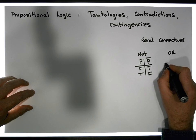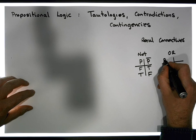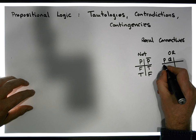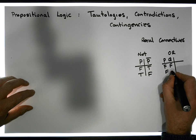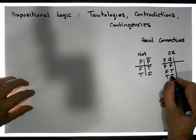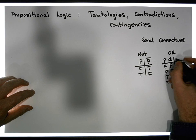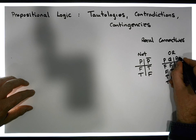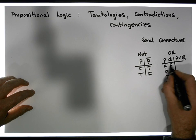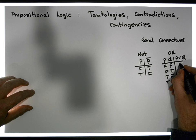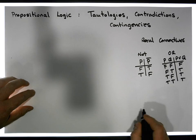We also have the OR connective, which is binary — it takes in two statements, p and q. The truth values are: false OR false = false, false OR true = true, true OR false = true, true OR true = true. OR is only ever false when both inputs are simultaneously false; everywhere else it's true.